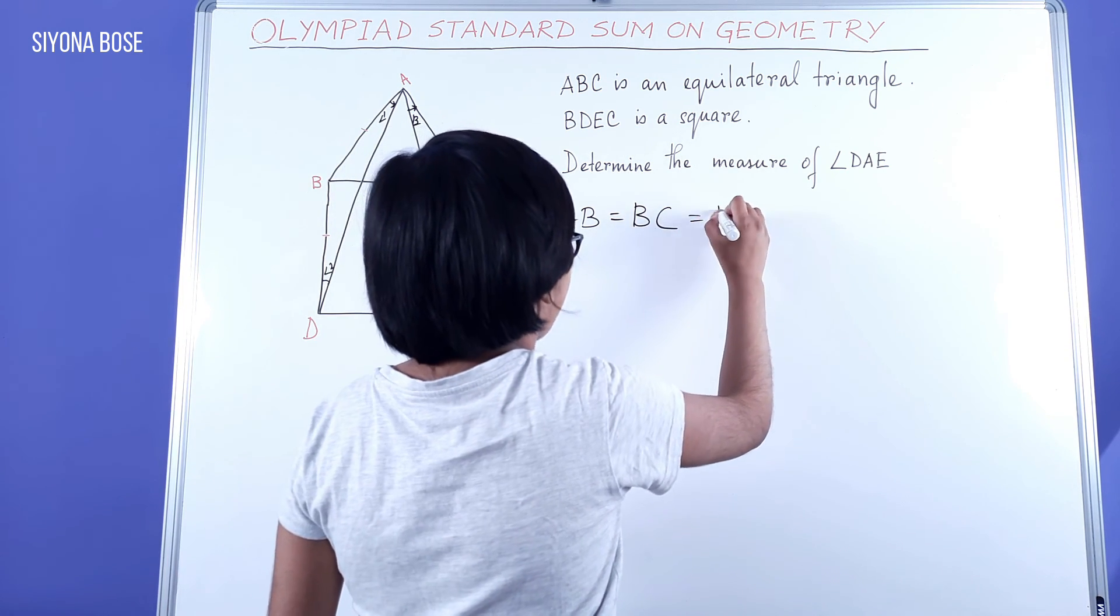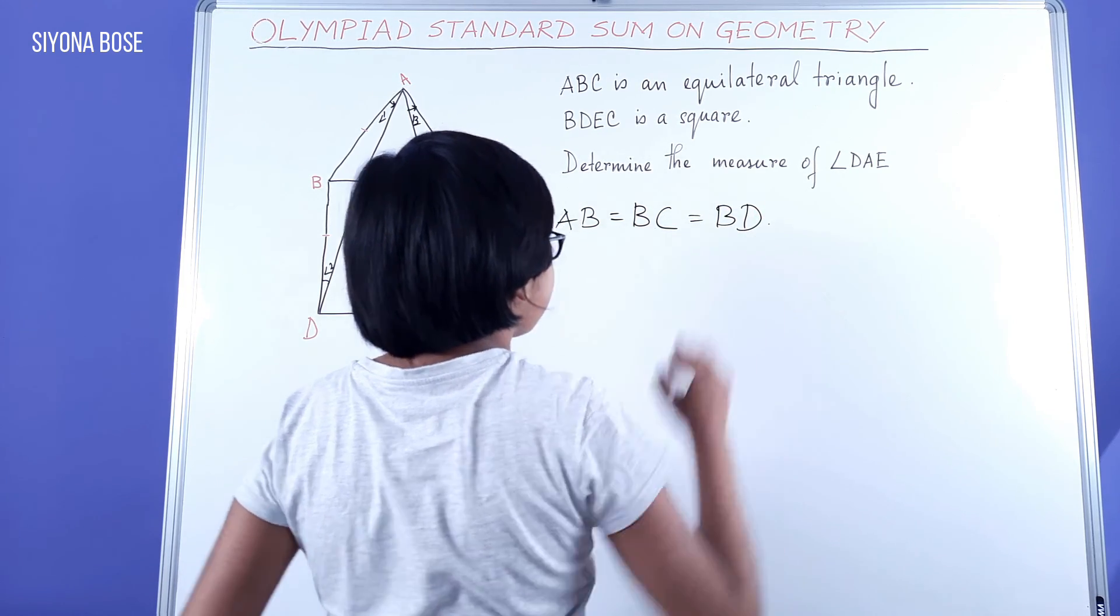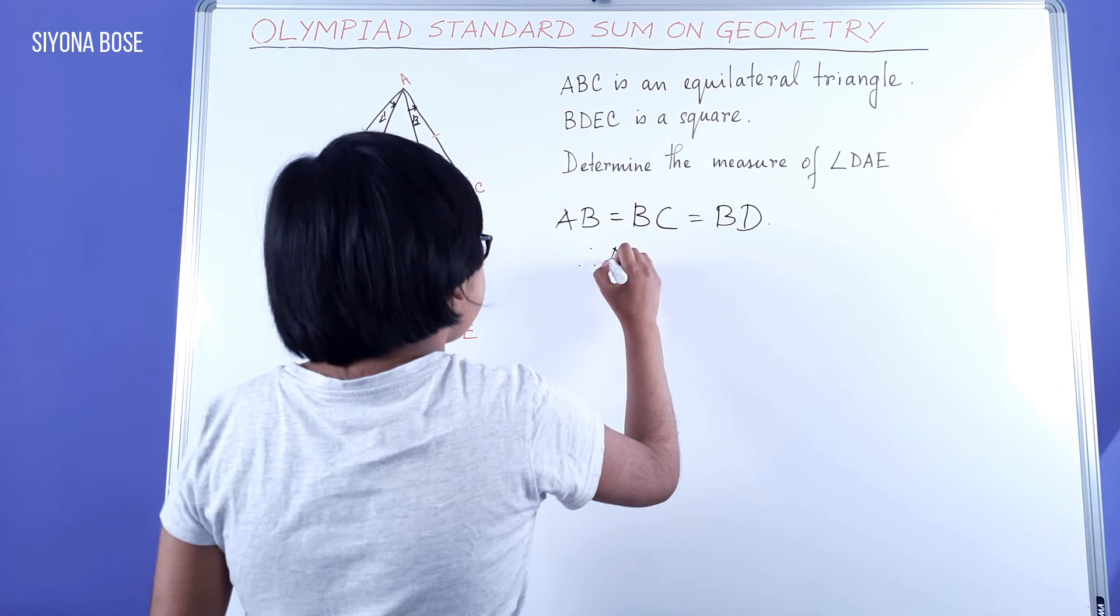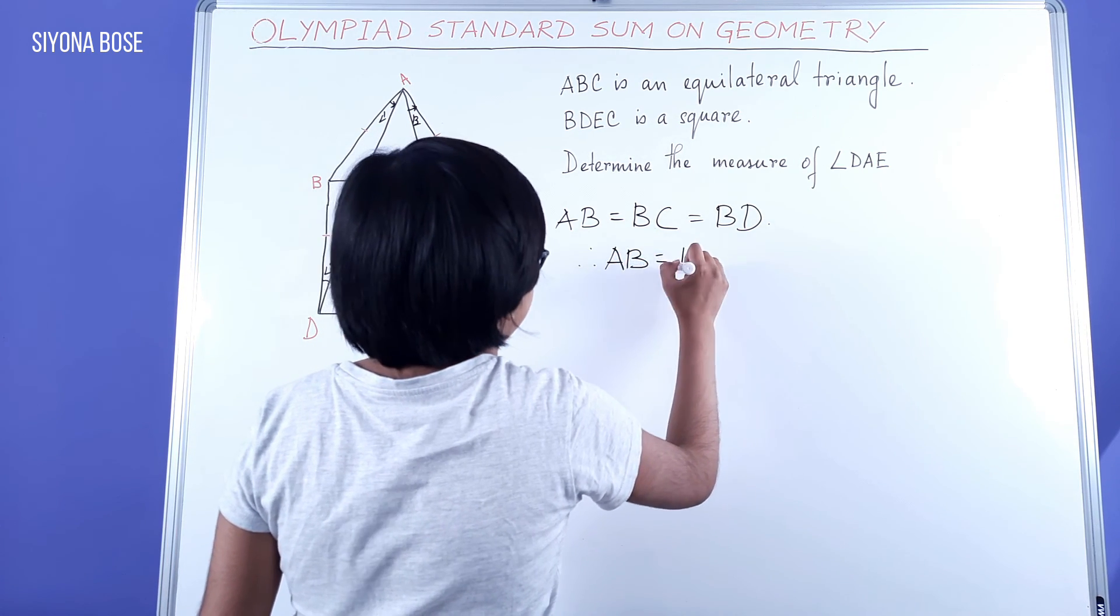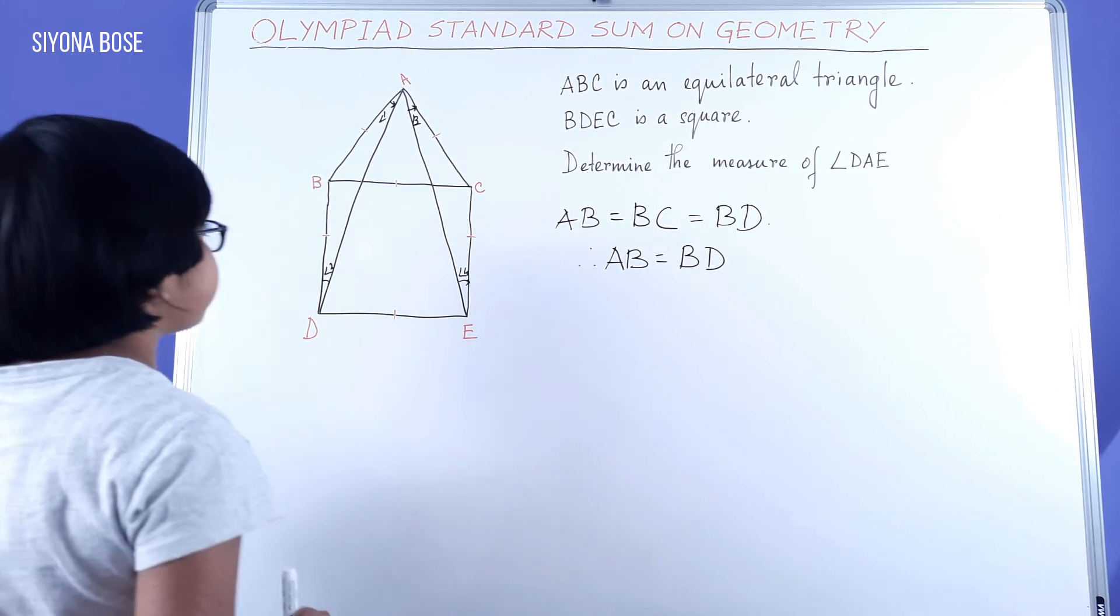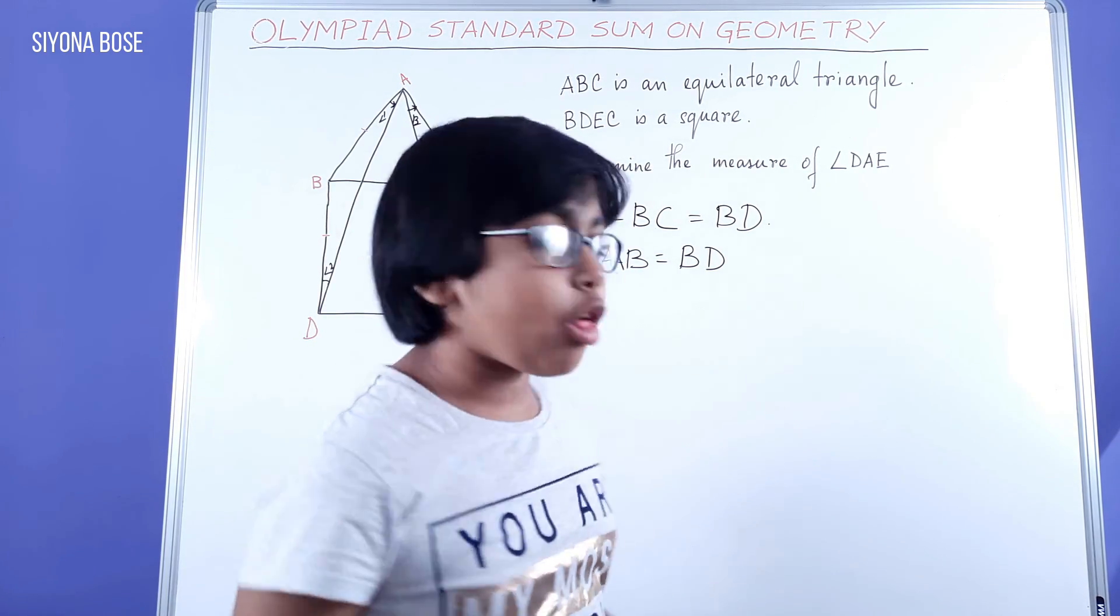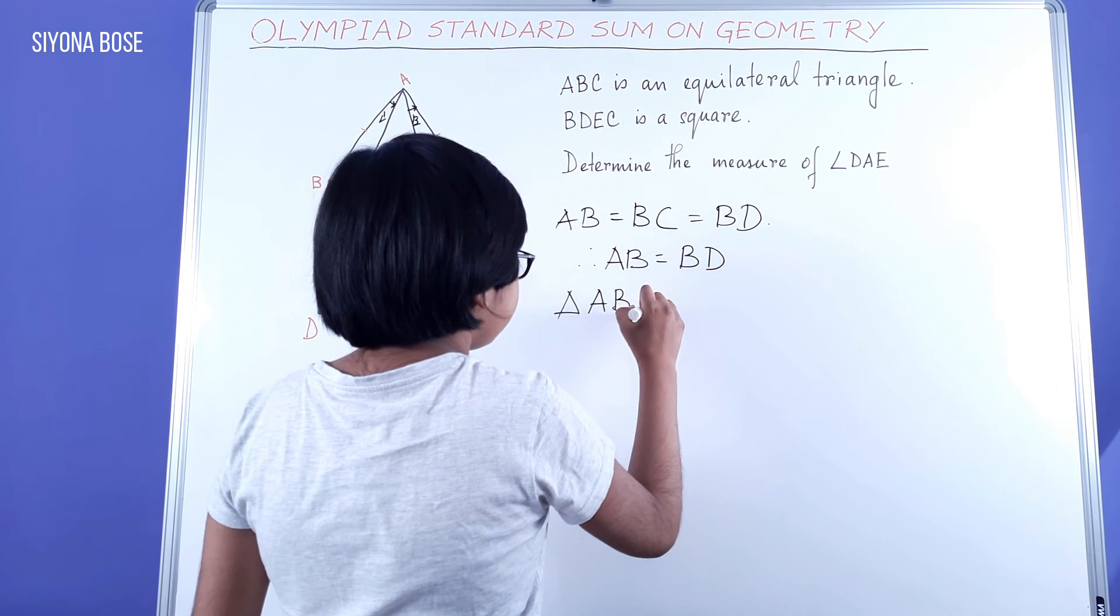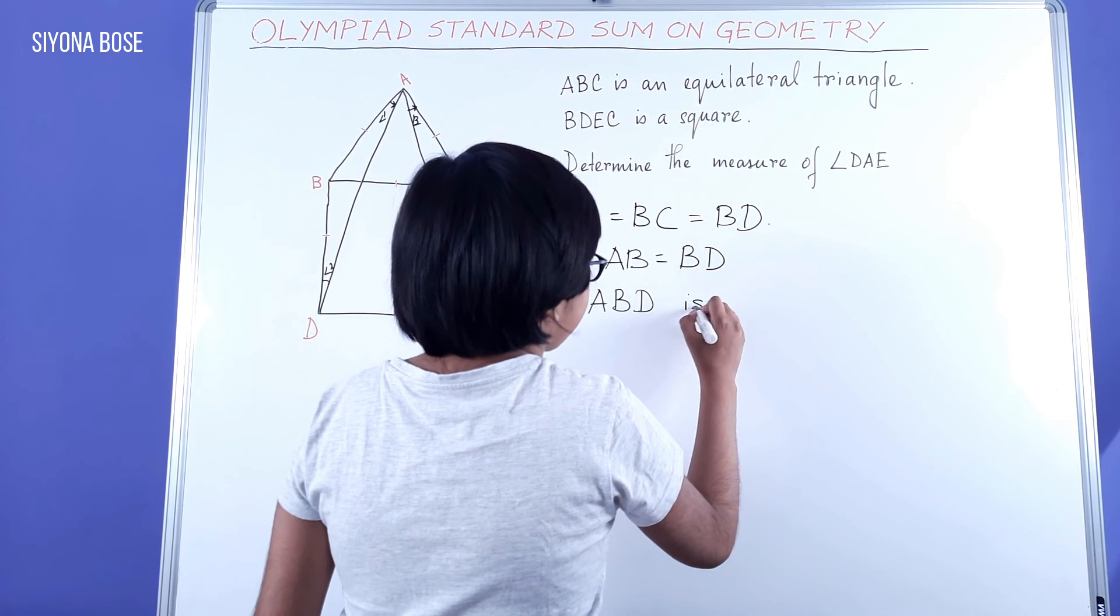Therefore, AB equal to BD, which makes triangle ABD an isosceles triangle.